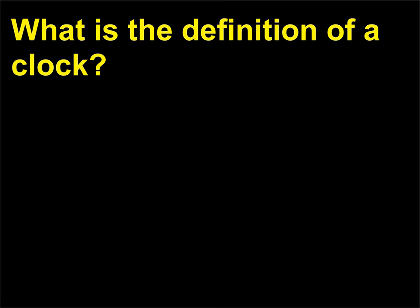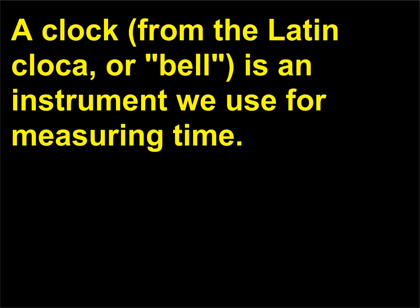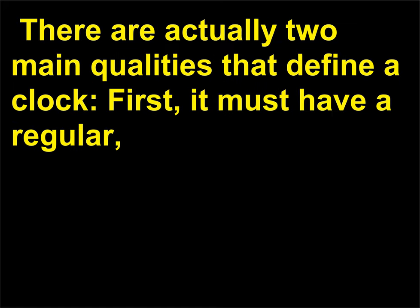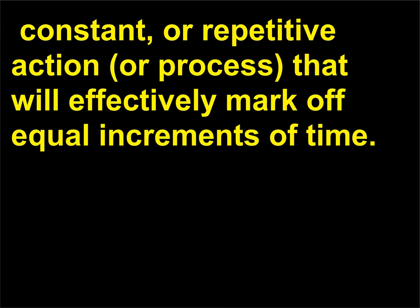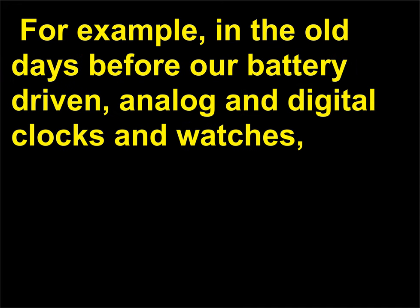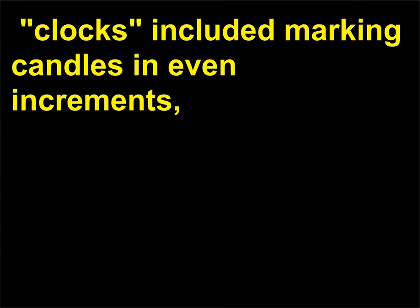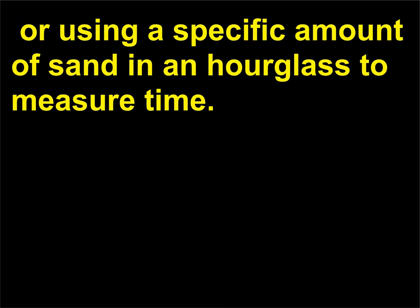What is the definition of a clock? A clock, from the Latin clica, or bell, is an instrument we use for measuring time. There are actually two main qualities that define a clock: first, it must have a regular, constant, or repetitive action or process that will effectively mark off equal increments of time. For example, in the old days before battery-driven analog and digital clocks, clocks included marking candles in even increments, or using a specific amount of sand in an hourglass to measure time.